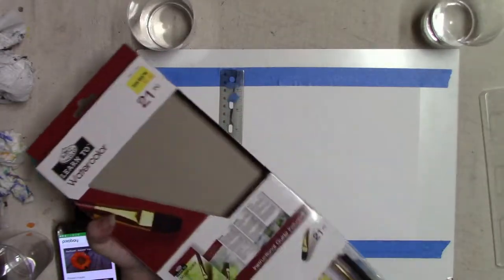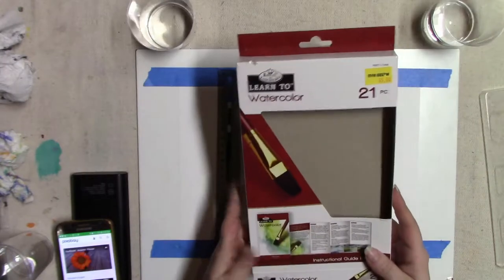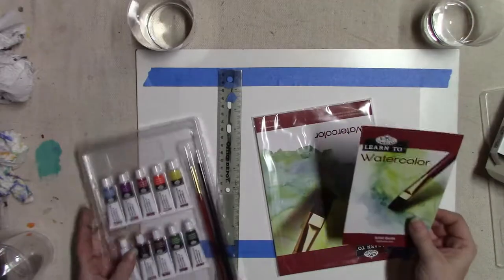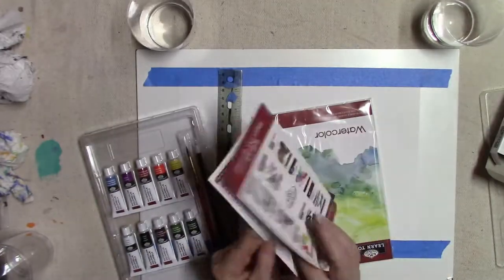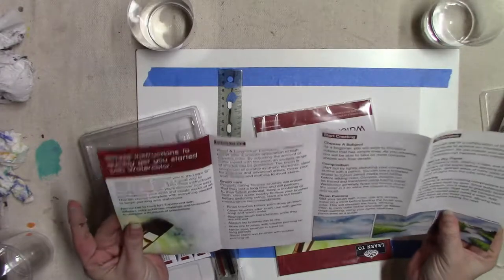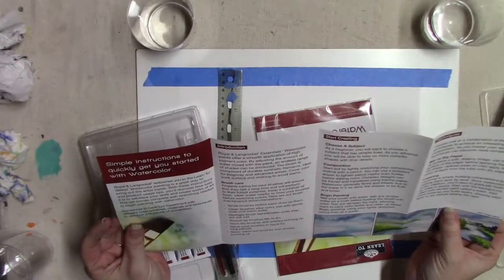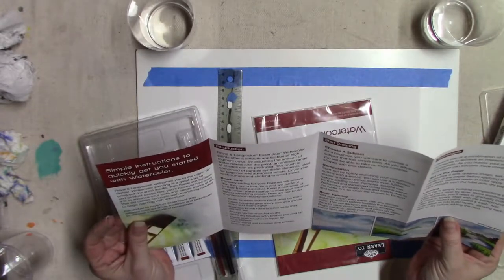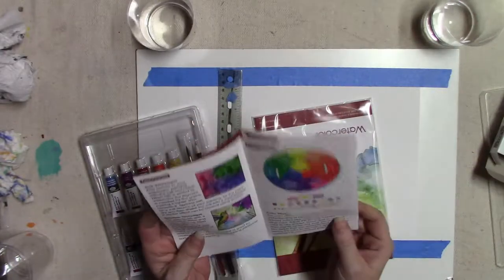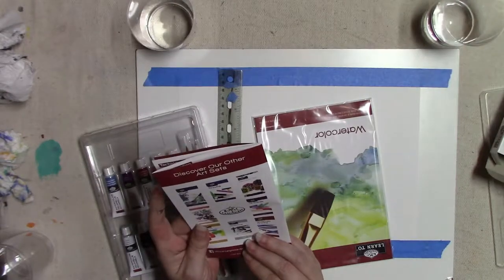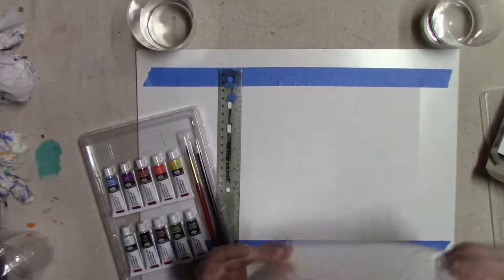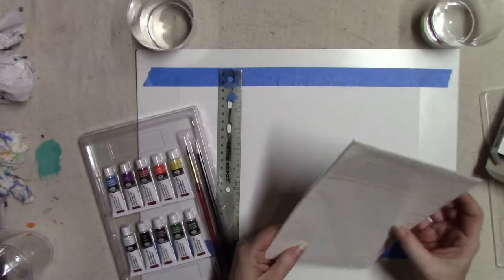I didn't realize that this set came with paper in it. Decided to take a look at the guide, see what was inside there. Had some tips on color mixing and stuff and it showed a list of other little kits that you can buy from them.